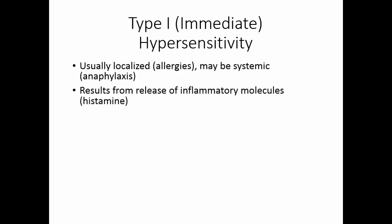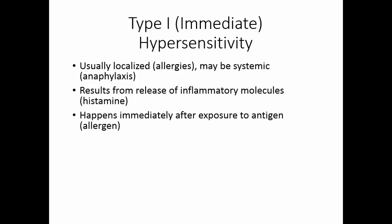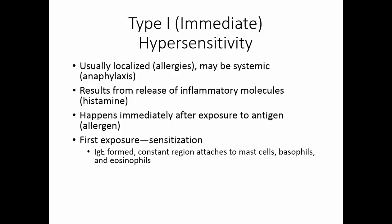Type 1 hypersensitivity results from the release of inflammatory molecules, particularly histamine. This release of histamine happens immediately after exposure to the antigen. Because these are typically allergies, we call these antigens allergens. The first time an individual is exposed to something that's going to be an allergen, they are sensitized to it. This means that they form IgE-type antibodies.